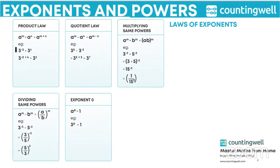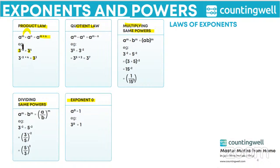Let us see some laws of exponents. We have mainly three laws here: product law, quotient law, and then we have dividing same powers, exponent 0, and multiplying same powers. In the product law, a to the power m into a to the power n equals a to the power m plus n — we are taking the product of two exponents, so the exponents get added. For example, 3 to the power minus 2 into 3 to the power 4: since the base is same, we write the base once and take the sum, minus 2 plus 4, which is 3 squared.